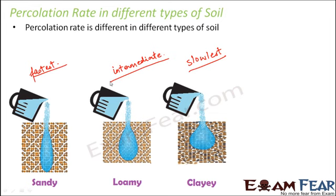Please do not get confused — I told you before that sandy soil holds the minimum amount of water, but now I am saying it has the maximum percolation rate. Both are two different things. Holding water means how much water the soil retains — so this soil holds more water, even within a small depth. But sandy soil allows more water to pass through it quickly, meaning it is not able to hold water; water is just passing down. Whereas clayey soil holds a huge amount of water and does not allow it to go deep down. That is the difference between the two properties.